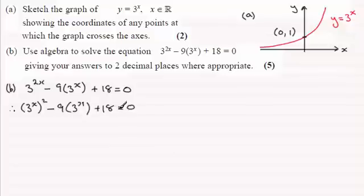And what we've got here is a quadratic equation in 3 to the power x. It's most probably easier to see, not that you have to do this, but you could let some letter like A or B, Y, whatever, equal 3 to the power x. So that what you've got here then is the quadratic equation a squared minus 9a plus 18 equals 0.